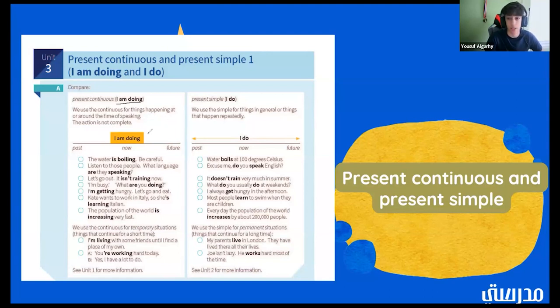Here we have a ton of examples for our present continuous. We have the water is boiling. Be careful. Okay, so this is present continuous because it's saying that the water is boiling. That doesn't mean it's done boiling. It's boiling now. Doesn't mean it's done. And then we have listen to those people. What language are they speaking? Now we have let's go out. It isn't raining now. I'm busy. What are you doing? I'm getting hungry. Let's go and eat.